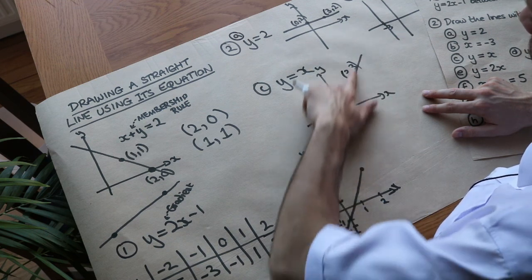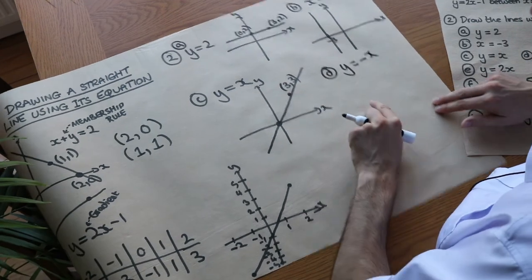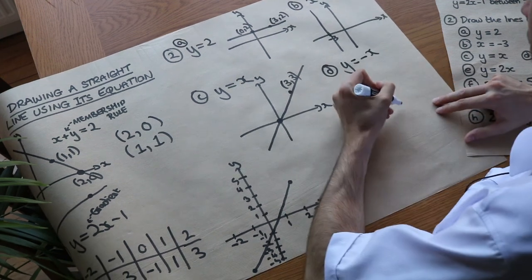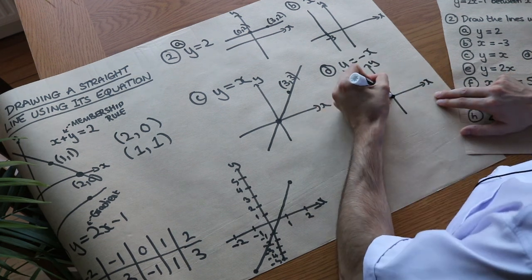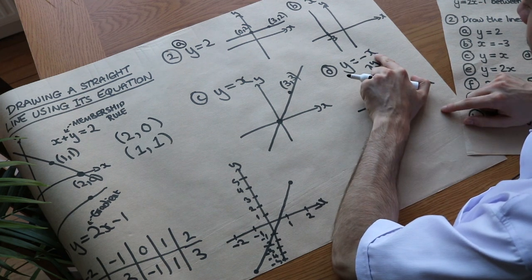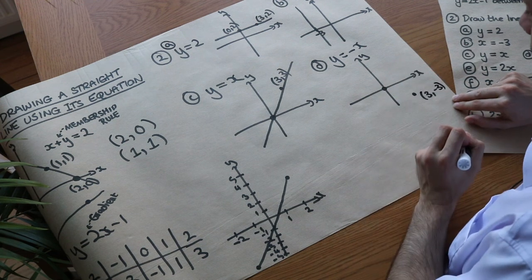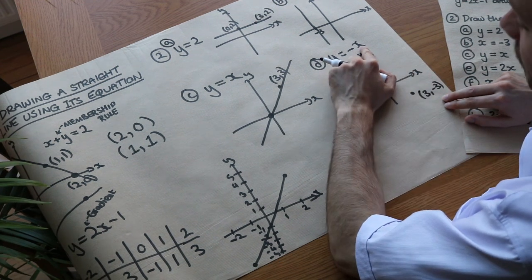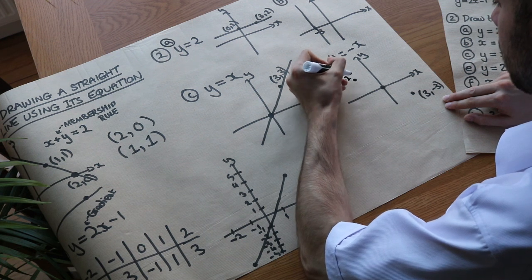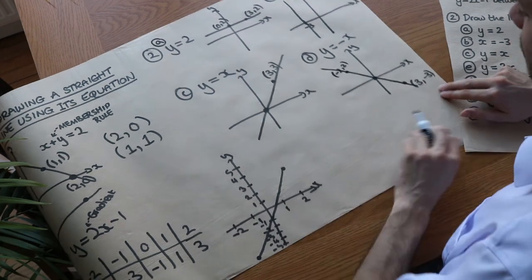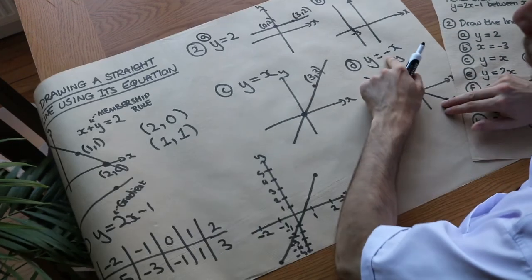What about y equals minus x? This membership rule says whatever the x value is, y is minus that x value. If x is 0, y = −0 = 0, so it goes through (0, 0). If x is 3, y is −3, giving point (3, −3). Or if x is −2, then y = −(−2) = 2, so it goes through (−2, 2). We get a line at 45 degrees going through the origin but going downhill.